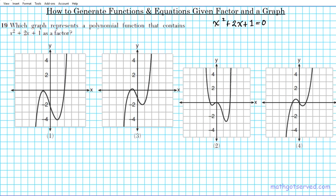To do this, we're going to factor this quickly. We'll use the AC method. AC is just 1, and B is 2. So you ask yourself: what two numbers multiply to give you 1 and add to give you 2? The answer is 1 and 1 — one times one is one, and one plus one is two.